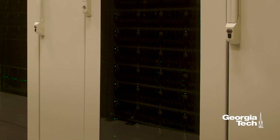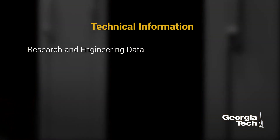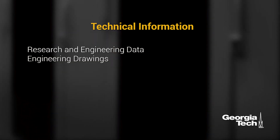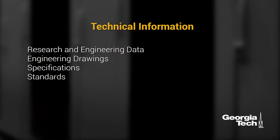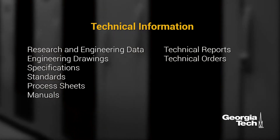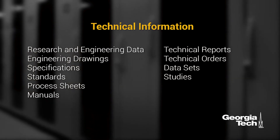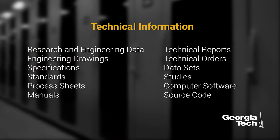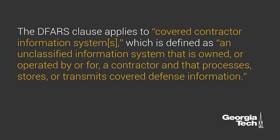Examples of such information could include technical information, including research and engineering data, engineering drawings, specifications, standards, process sheets, manuals, technical reports, technical orders, datasets, studies, and computer software and source code, among others. The DFARS clause applies to covered contractor information systems, which is defined as an unclassified information system that is owned or operated by or for a contractor and that processes, stores, or transmits covered defense information.